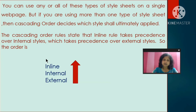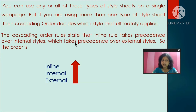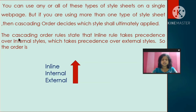The cascading order rules state that inline rules take precedence over internal styles, which take precedence over external styles. So the order of priority is: external, then internal, then inline has the highest priority. Just remember this — how it affects your styling we will study later.